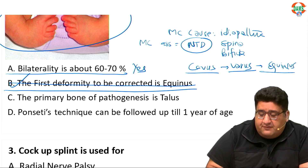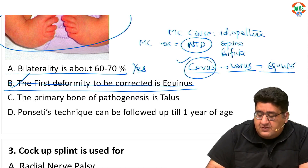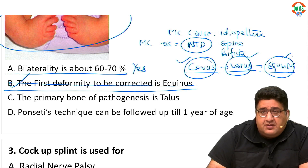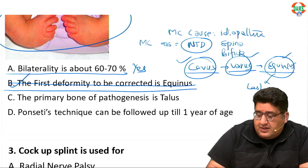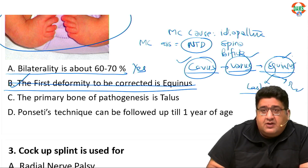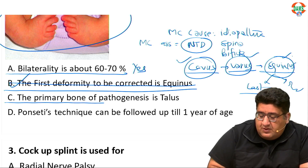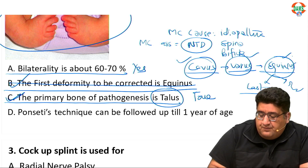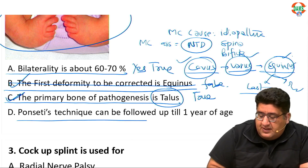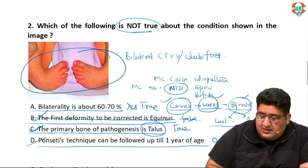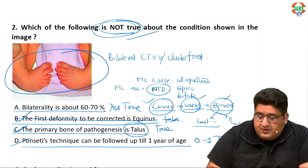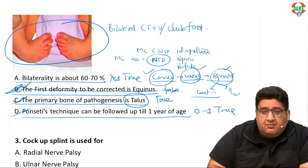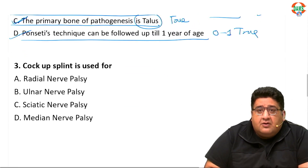The first deformity to be corrected is cavus, followed by varus, followed by equinus. Equinus is the last to be corrected and also the most common to reoccur. The primary bone of pathogenesis is talus — this is true. Ponseti technique is used for 0 to 1 year of age — this is true. The question asks 'not true,' meaning false. So the answer is B.